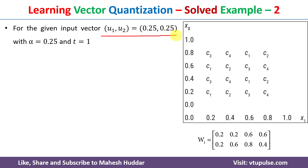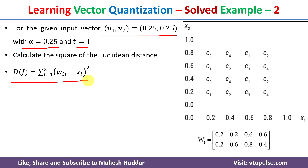The first input vector is u1, u2 = (0.25, 0.25), the learning rate alpha is 0.25, and this input vector belongs to class t1. We need to calculate the Euclidean distance to each of the classes using the formula: dj = summation from i=1 to 2 of (wij minus xi) squared. I have taken 2 here because the input vector contains 2 units — u1 and u2. Here j is the class to which we are calculating the distance.